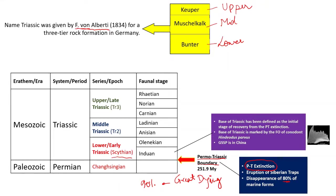The base of the Triassic is marked by the first occurrence of the Conodont Hindeodus parvus. Conodonts are phosphatic marine microfossils and very important index fossils. The GSSP — Global Stratotype Section and Point — of the base of the Triassic is in China. The first occurrence of Hindeodus parvus marks the base of the Triassic; this can appear in multiple choice questions in GSI prelims exams.